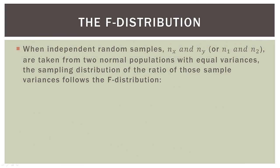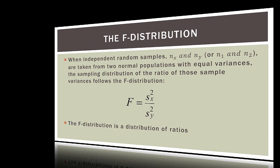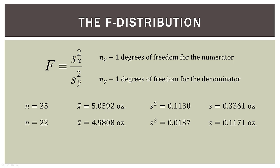So the F ratio follows its own distribution. When independent random samples — N sub X and N sub Y, or you might see it written as N sub one and N sub two — are taken from two normal populations with equal variances, the sampling distribution of the ratio of those sample variances follows the F distribution. Now, the most important thing is that each of the numerator and denominator have their own degrees of freedom. In the numerator, it's N minus one degrees of freedom, and in the denominator, it's N minus one degrees of freedom as well.